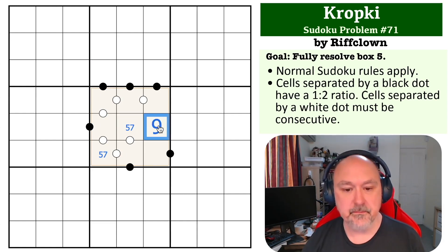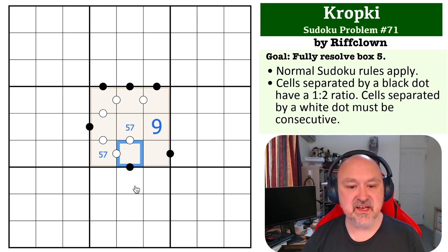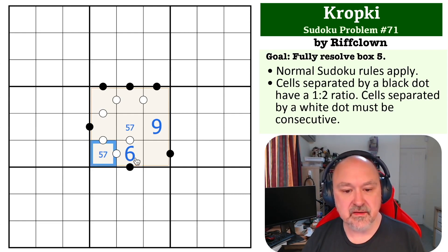And then this becomes the nine. Okay, now we've got a five and a seven, but because these are five and seven, this has to be consecutive with both five and seven, which makes this the six.